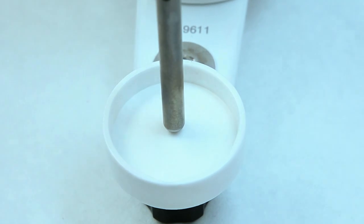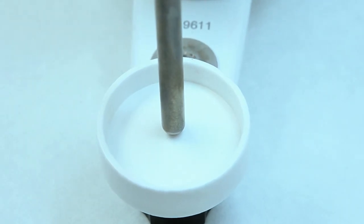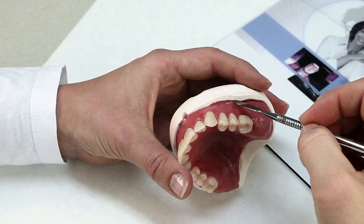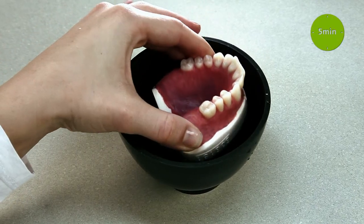At the same time, the support pin should contact the tray. After that, secure the denture body with wax and store the model in a water bath for 5 minutes.